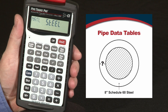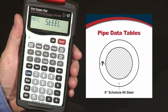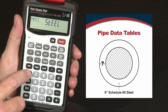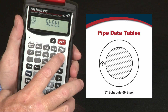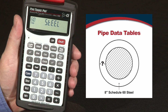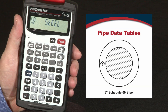Once you've selected a material, you can determine the pipe type you want using a secondary function. Use the convert key and then pipe size for pipe types. That gives you the different schedules — all the different schedules available for any of the material types. In this case, steel, we're using Schedule 80.